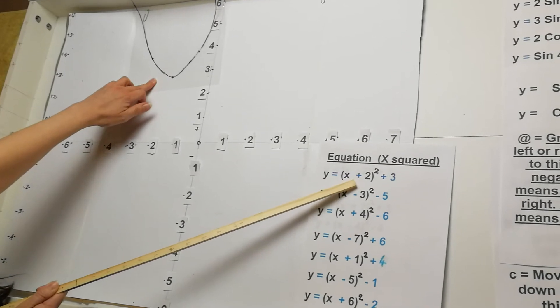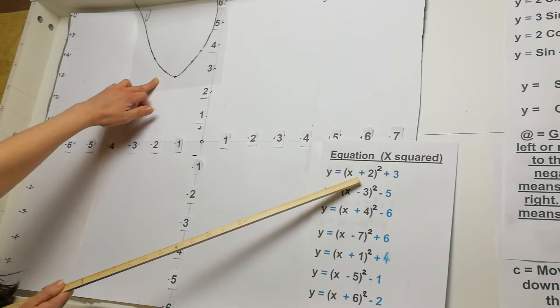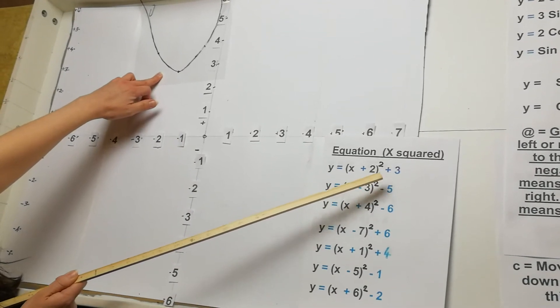So just to recap, inside the bracket, if it's positive, you move to the left. If it's negative, you move to the right. The outside is to do with moving the graph up and down.